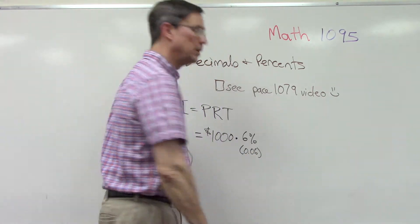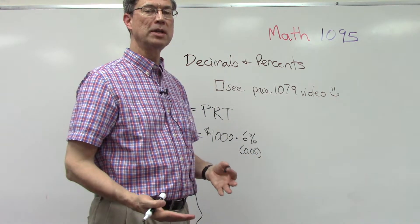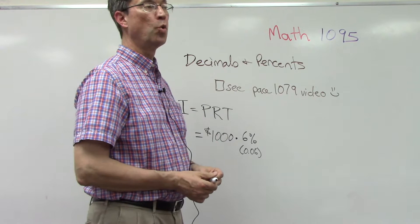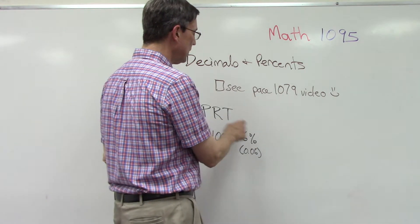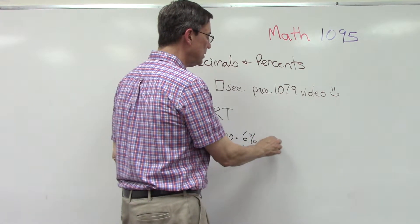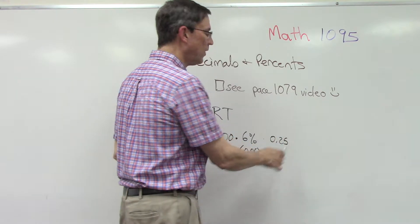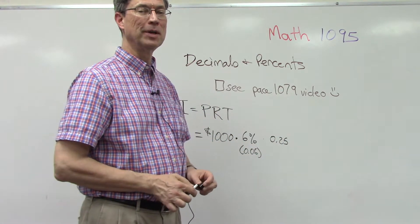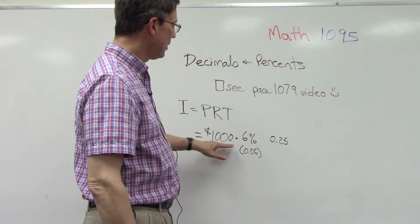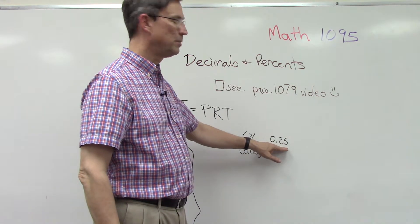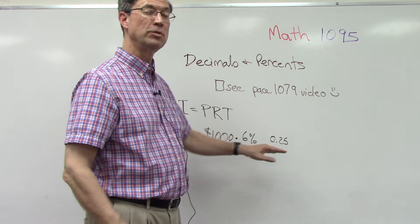Sometimes they'll do quarterly. In fact, on the next video we'll talk about quarterly interest. Quarterly instead of a whole year is 0.25 of a year. So you would multiply $1000 times 0.06 times 0.25 to see what the interest would be for those three months.